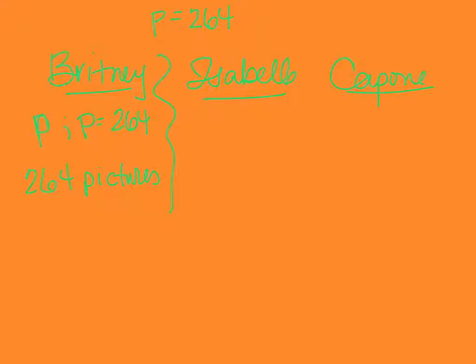The expression that we wrote for Isabel was P divided by 2. And P equals 264. 264 divided by 2. 2 goes into 2 once. 2 goes into 6 three times. 2 goes into 4 two times. So it's 132 pictures for Isabel.